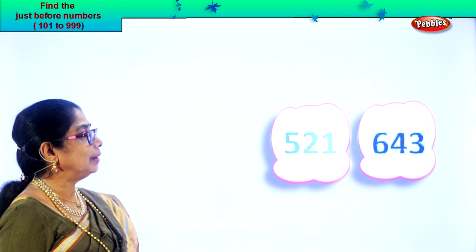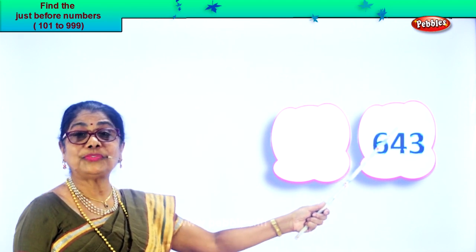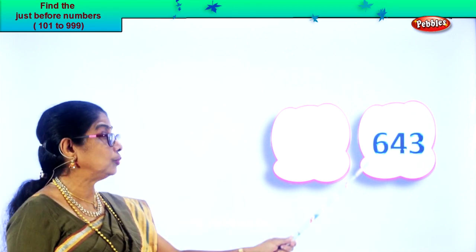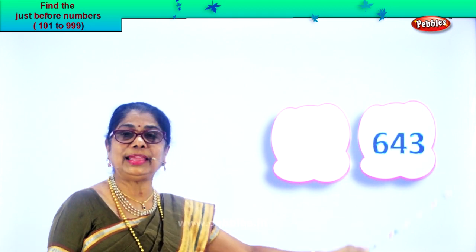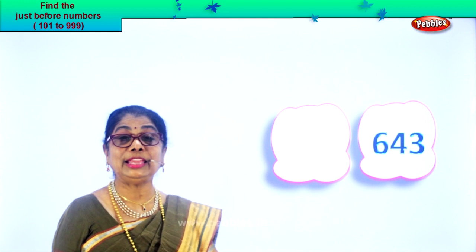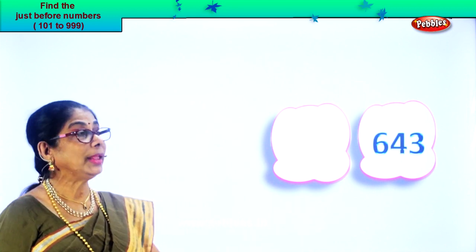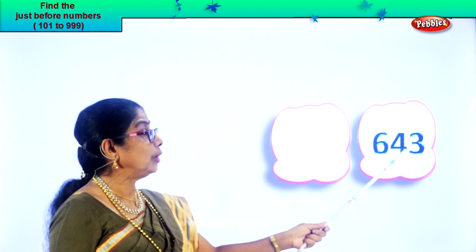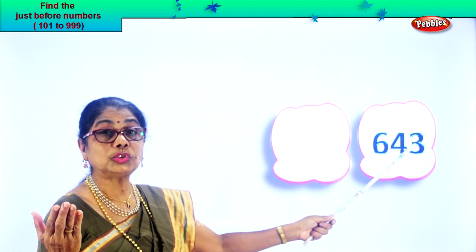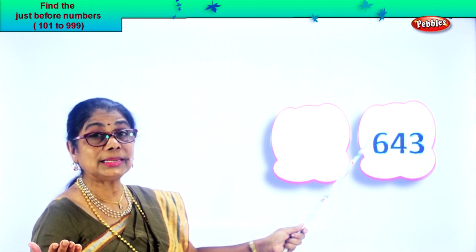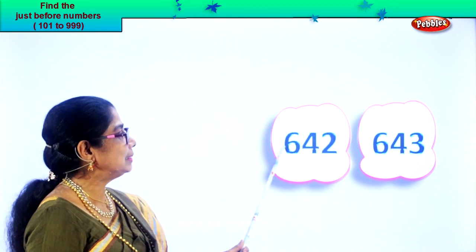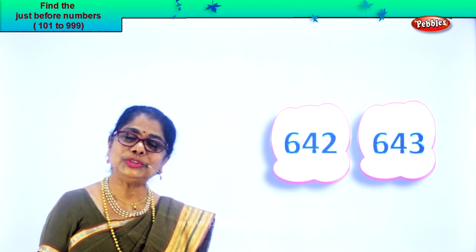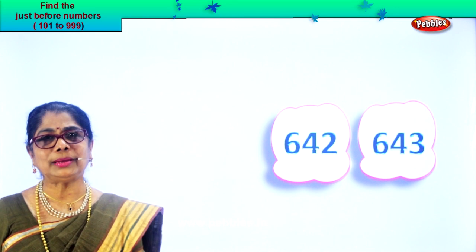Here we are — we have six, four, and three. Three in the ones place, four in the tens, and six in the hundreds place. Read aloud: six hundred and forty-three. We are looking for the number just before that. In the ones place you have three — one less than three is two. So forty-three becomes forty-two. The number before is six hundred and forty-two. Six hundred and forty-two, six hundred and forty-three.